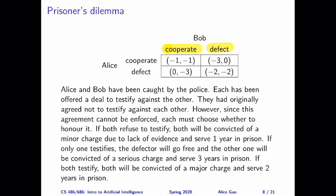There are three types of outcomes they can achieve in this game. If both of them refuse to testify, this corresponds to the outcome where they both cooperate. If they both cooperate, then both will be convicted for a minor charge because neither is talking and there's not enough evidence, so each of them will serve one year in prison. The numbers refer to the number of years served in prison, and your utility is the inverse of the number of years you serve.